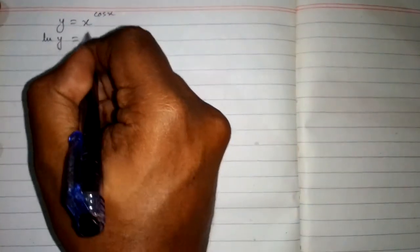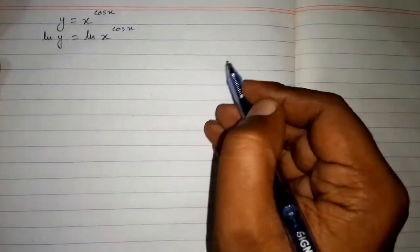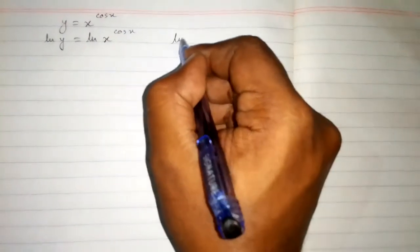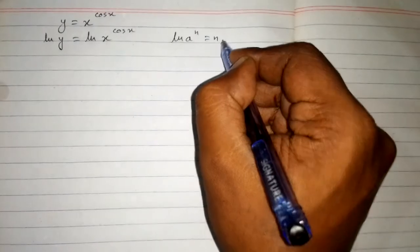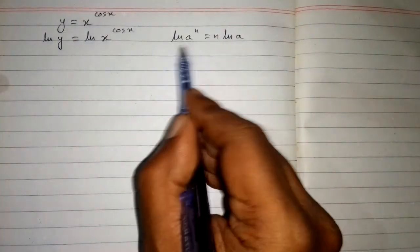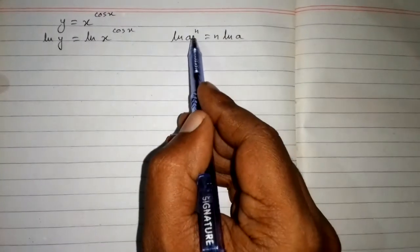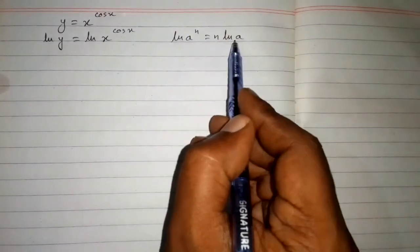So we have ln y equals ln of x to the power cos x. We know that ln of a to the power n equals n times ln of a.